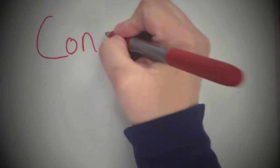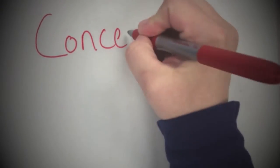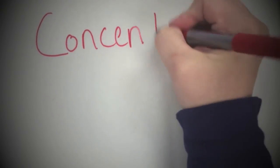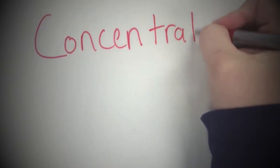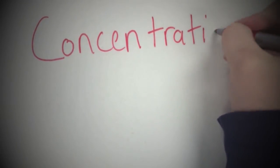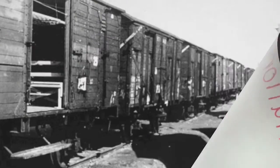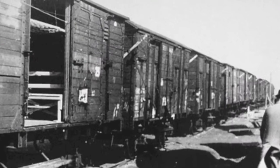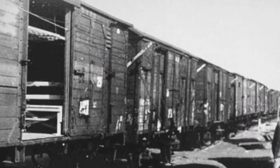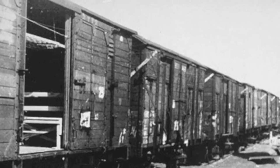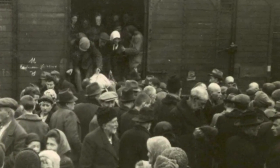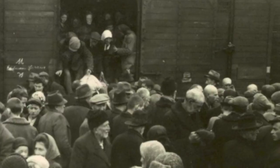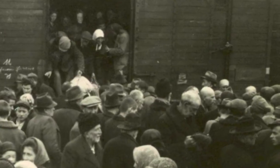In 1942, Hitler began implementing the Final Solution, which was his plan to rid Europe of their Jewish population. Jews were packed into cattle trains without any food or water and sent to concentration camps, where people were chosen immediately for work or death.